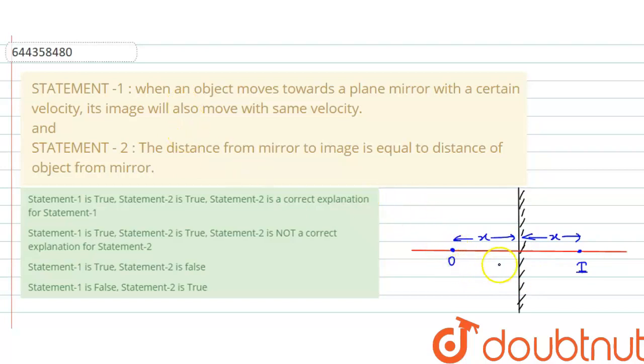So now, if the object starts moving towards the mirror. Here, let's say the question: when an object moves towards a plane mirror. So let's say if this object moves towards mirror with speed v, and after some time if the object is near the mirror, then at this instant the image should also be near the mirror, because object and image distance from mirror should always be same.